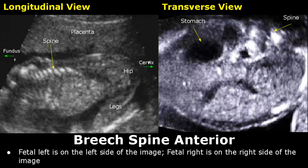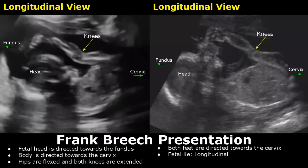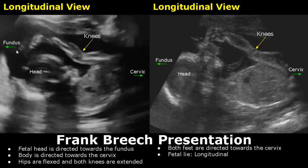The next type of breech presentation is frank breech, which is the most common type of breech presentation. The hips are flexed and both knees are extended, directing the feet towards the fundus. The fetal lie in this presentation is also longitudinal.